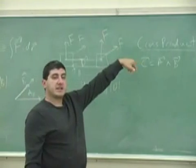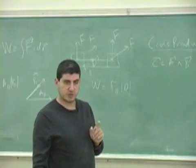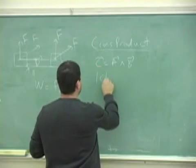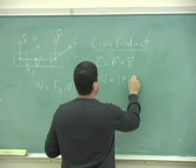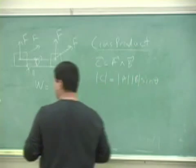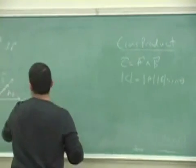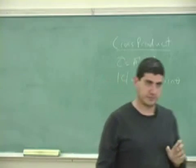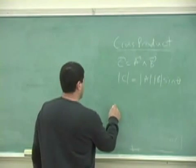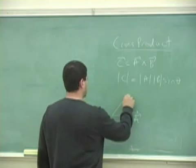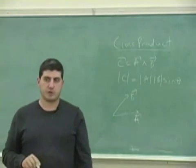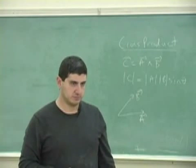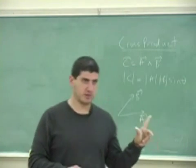Certain other things are defined as cross products, which is the torque. So let's learn about the cross product. The cross product gives you a third vector C. The magnitude of vector C is the magnitude of A times the magnitude of B times the sine of the angle between A and B — sine, not cosine. So if A is like this and B is like this, what's the geometrical meaning of the magnitude of the cross product?